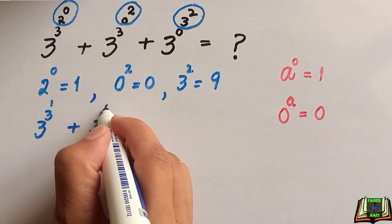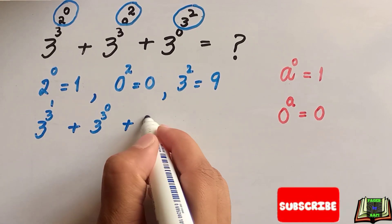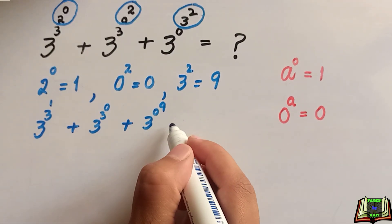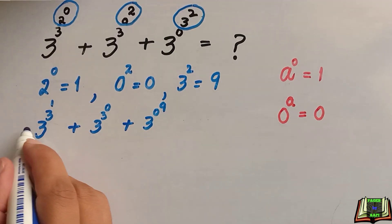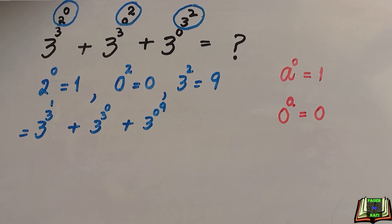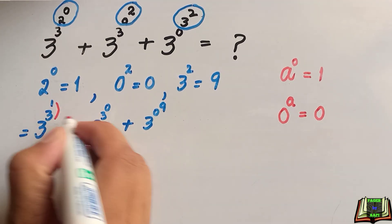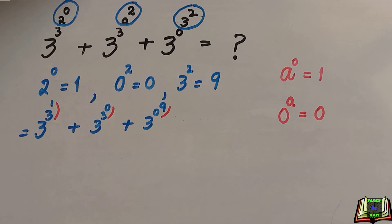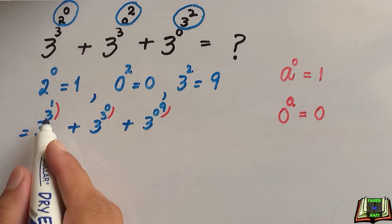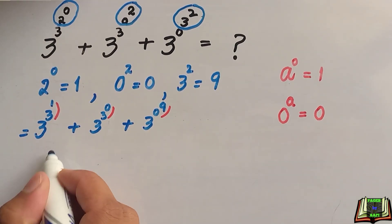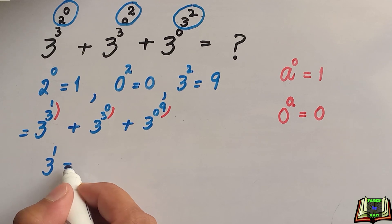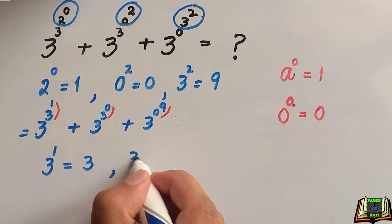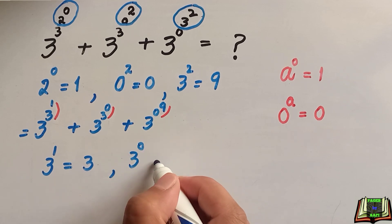Now we have to solve the next layer of parentheses. We are going to solve 3 raised to power 1 and 3 raised to power 0. 3 raised to power 1 is equal to 3, and 3 raised to power 0 is equal to 1.